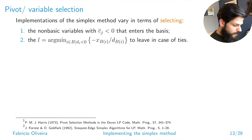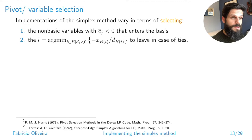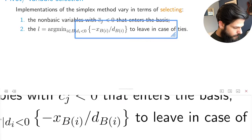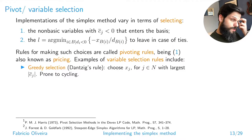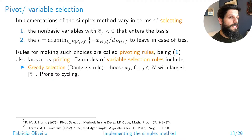It might also be the case that when selecting the variable to leave the basis, you have ties — the theta value is the same for more than one variable, which becomes more likely as you have many more variables. These rules for choosing which variables go in and out of the basis are called pivot rules or pivoting rules. This part specifically is known as the pricing phase of the simplex method — getting the variable with the most attractive reduced cost.